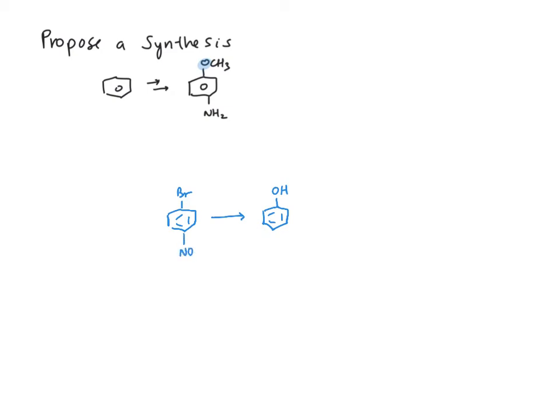We know that we need to have a strong electron withdrawing group to do that. So we need to have our nitro group, and we're going to position it para to the bromine because we can see in the product that we've got an amine here. At some point, we're going to convert that nitro group into an amine. This is how we install our oxygen.